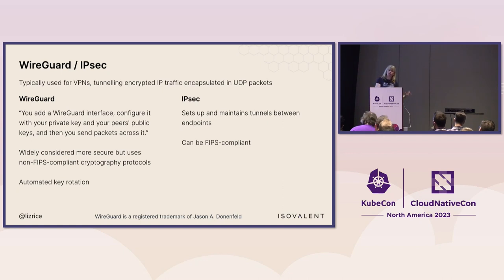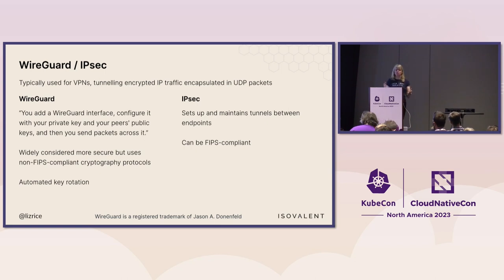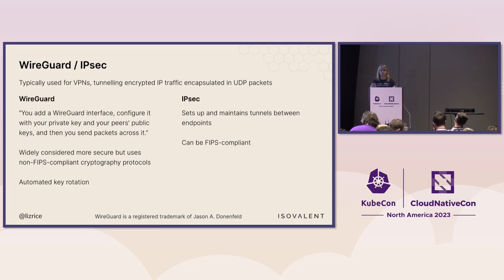That said, a lot of people consider WireGuard to be more secure — it's a newer alternative. You configure a WireGuard interface; as well as having the eth0 interface out of your node, you'd also have a wg0 interface. If you put a packet into it, it gets encrypted. You set up your private key and the public key for each peer, and then just send packets into that WireGuard interface. The cryptography protocols WireGuard uses are not deemed FIPS compliant — it's really more about money than technical merits. So that might push you toward IPsec if FIPS compliance is required. The other nice thing WireGuard does is automatically rotate keys for you.